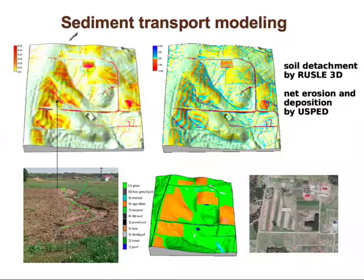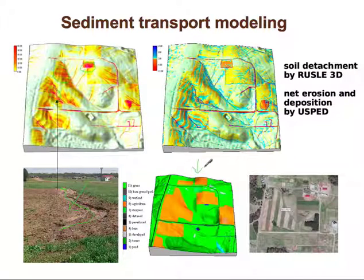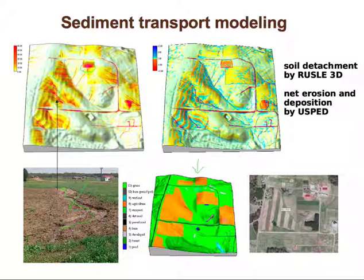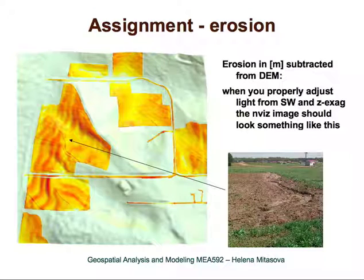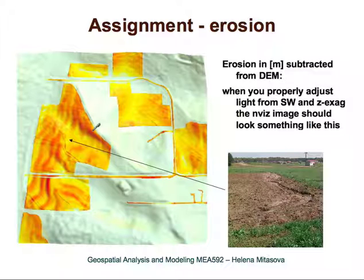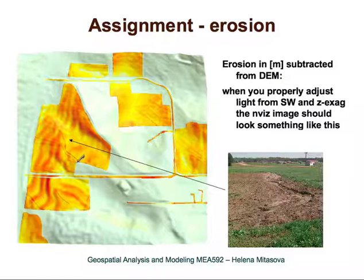These simulations, both for soil detachment and net erosion and deposition, were done for a land use scenario where the orange areas are agricultural areas and the green areas are covered by grass. This is an example of how you can modify the topography to incorporate features where the terrain elevation has changed only subtly. You can do this by converting erosion rate to change in elevation in centimeters and then subtracting it from the digital elevation model, using lighting and shading to highlight the very subtle carved-in channel resulting from the erosion model.